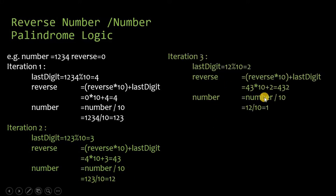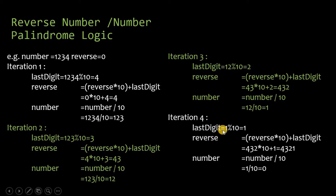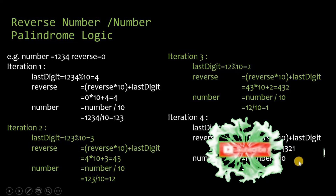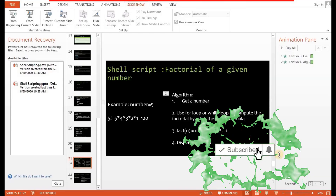Similarly, in iteration 3, reverse becomes 432 and number becomes 1. In iteration 4, reverse becomes 4321 and number becomes 0. As number becomes 0 we stop the process. The original number was 1234 and the reverse number we obtained is 4321. The same steps we have to perform in the program.